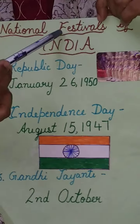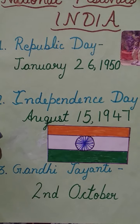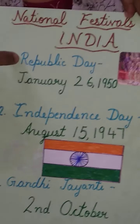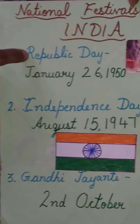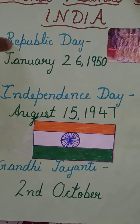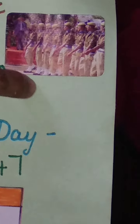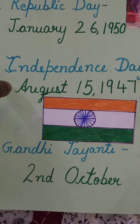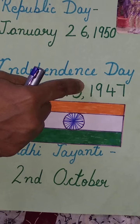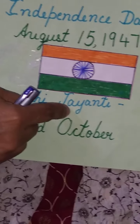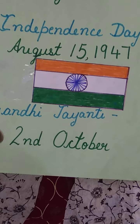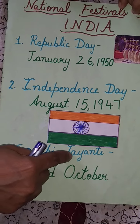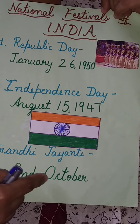Now let's revise the national festivals of India. The three main national festivals are Republic Day, Independence Day, and Gandhi Jayanti. Republic Day is celebrated on 26th January, and on this day the president hoists the national flag at India Gate and a grand parade is also held. India got its freedom from the British on 15th August, so it is celebrated as Independence Day. Gandhi Jayanti is the birth anniversary of Mahatma Gandhi, which is celebrated on 2nd October.